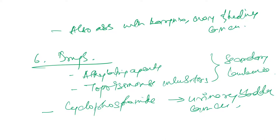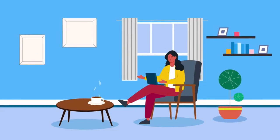This was all about chemical carcinogens. In your book — Sparsh Gupta — you can find a whole table listing different alkylating agents and different chemicals which cause different types of cancer. That table is useful for NEET PG and NEET MDS exam preparation. I have just given a brief summary of all those agents here.